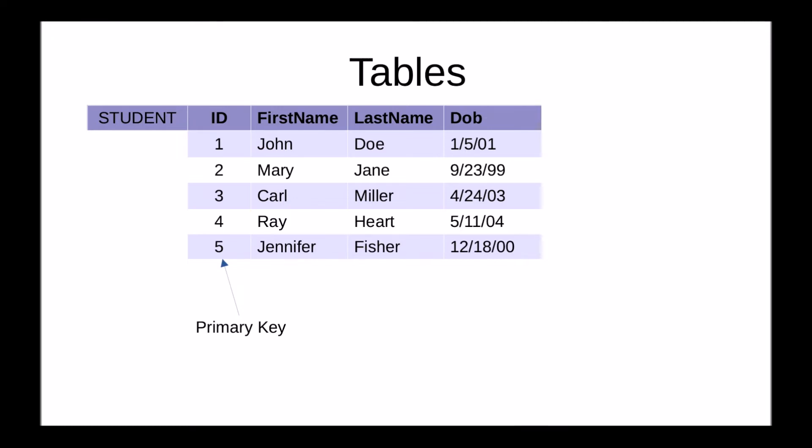Now the primary key is many times a single column, but it could span multiple columns. It could even span the entire row, but obviously that's not really ideal. It's much easier if we have a single column, a single ID that can be used to access and retrieve a single record.